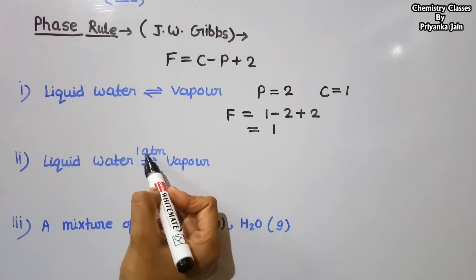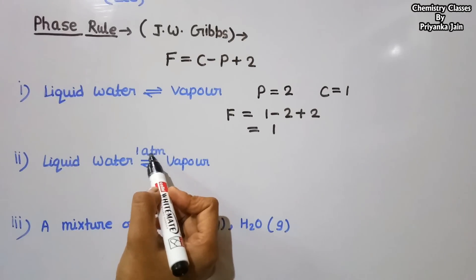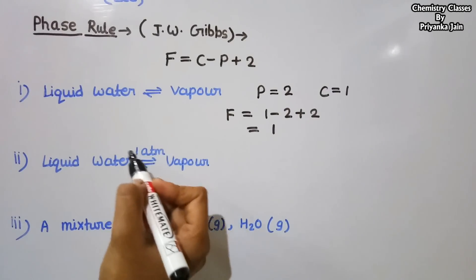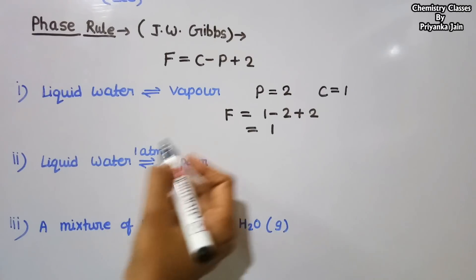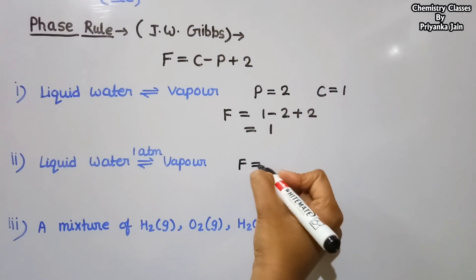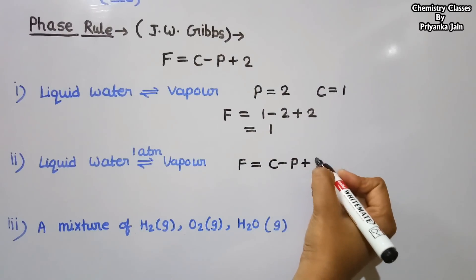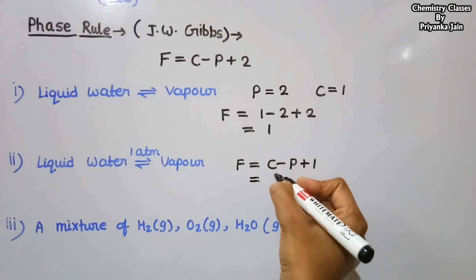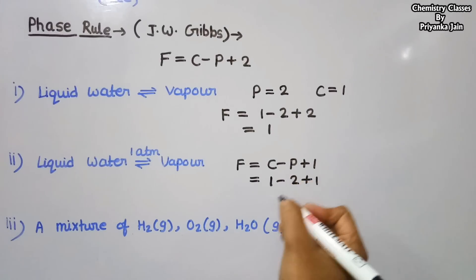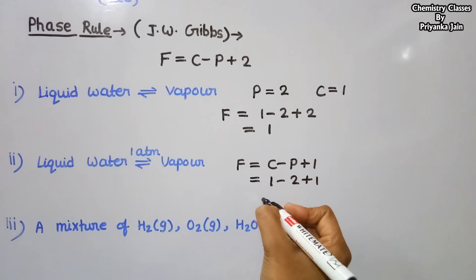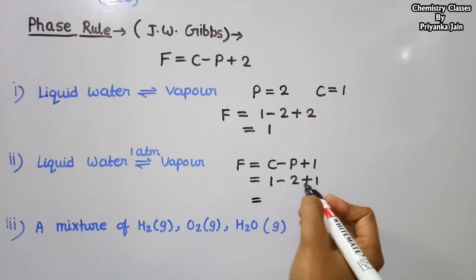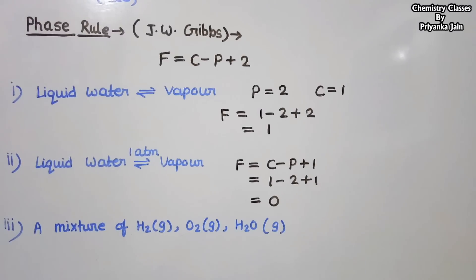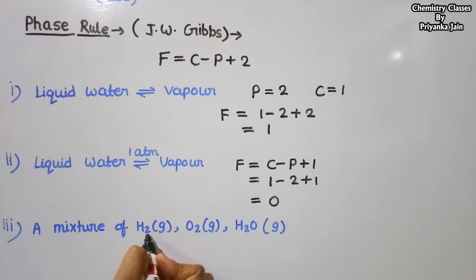Now consider another condition: liquid water and water vapors are in equilibrium at one atmospheric pressure. Here the pressure is held constant, so one variable is already fixed. The rule then becomes F = C − P + 1 because we have reduced one variable. So F = 1 − 2 + 1 = 0. The degree of freedom is zero.